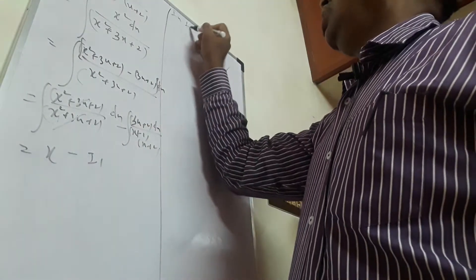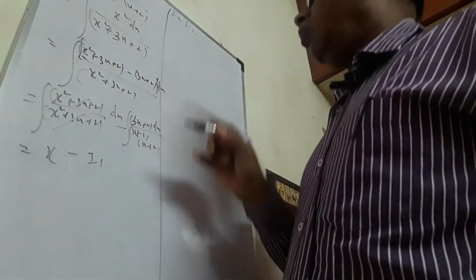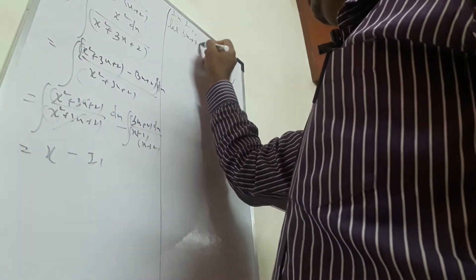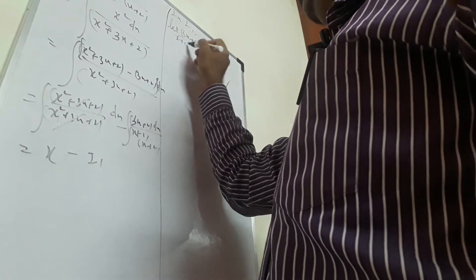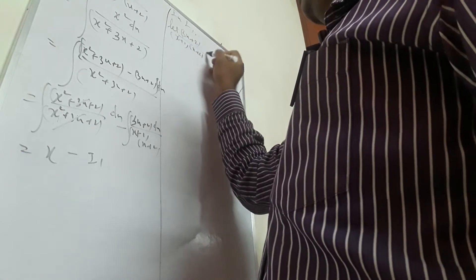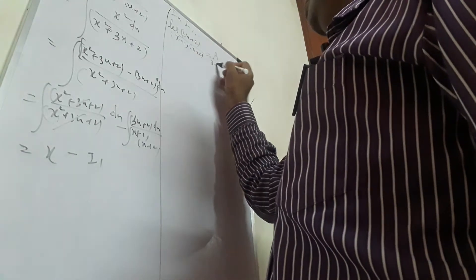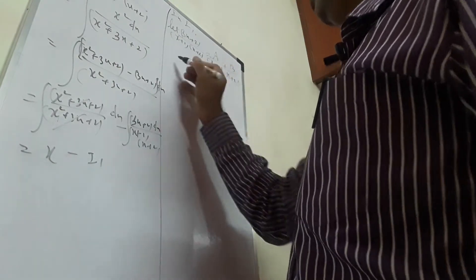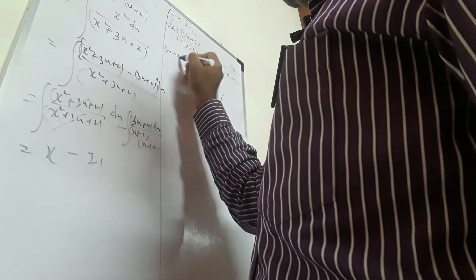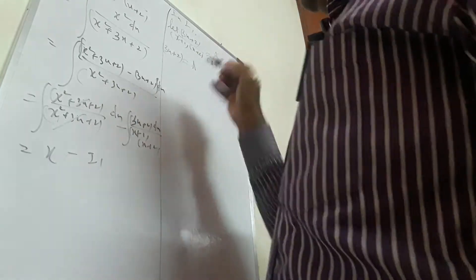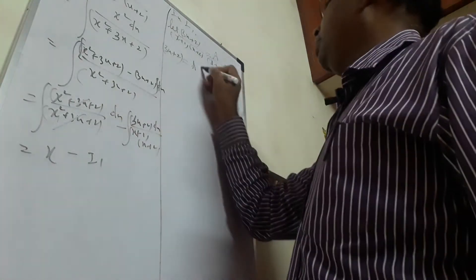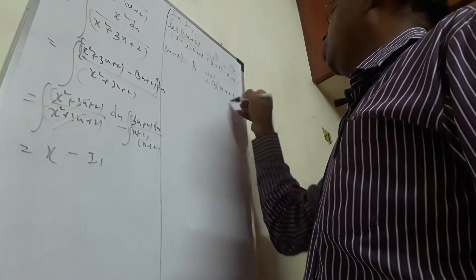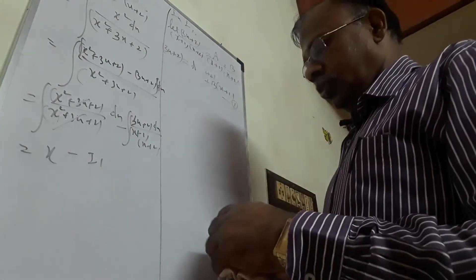In I1, what I will do is apply partial fractions. Let (3x + 2) divided by (x+1)(x+2) be equal to A/(x+1) plus B/(x+2). After taking LCM, 3x + 2 equals A(x+2) plus B(x+1). Name this equation 1.